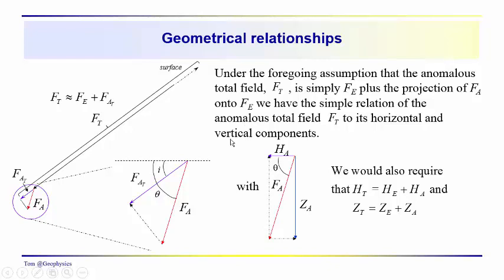The geometrical relationship: closing in on the anomaly, we have F sub A making an angle with the horizontal of theta. And then F sub AT is the projection onto the Earth's main magnetic field, so it makes an angle with the horizontal of I. F sub A has horizontal component H sub A and vertical component Z sub A. We also require that the horizontal component of the total field equals H sub E plus H sub A, the horizontal component of the main unperturbed field plus the horizontal component of the anomalous field. Same for the vertical component: Z sub E plus Z sub A.